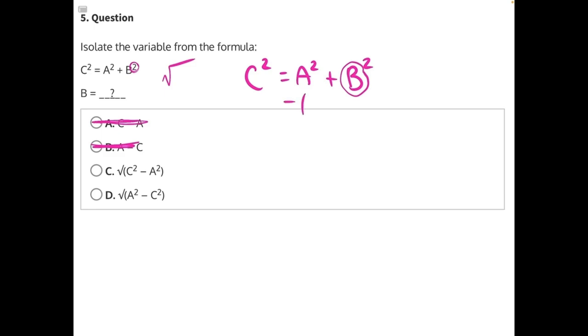a is being added to b, and the opposite operation for addition is subtraction, so let's subtract a squared from both sides. a squared and a squared will cancel, leaving us with c squared minus a squared equals b squared.